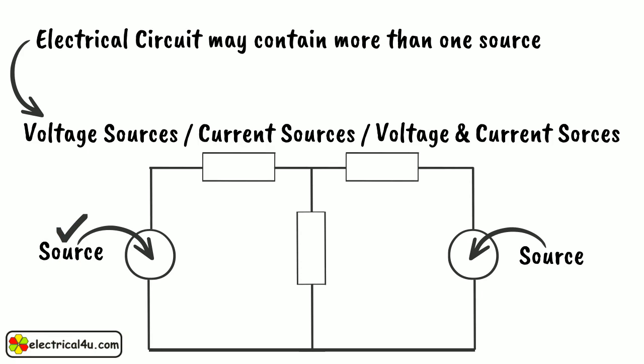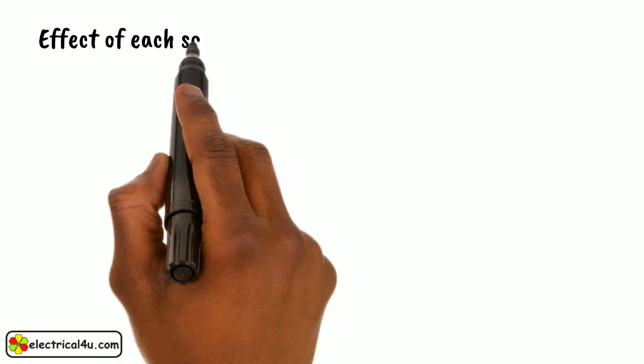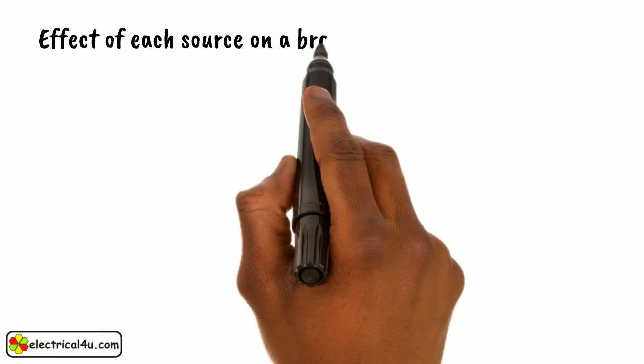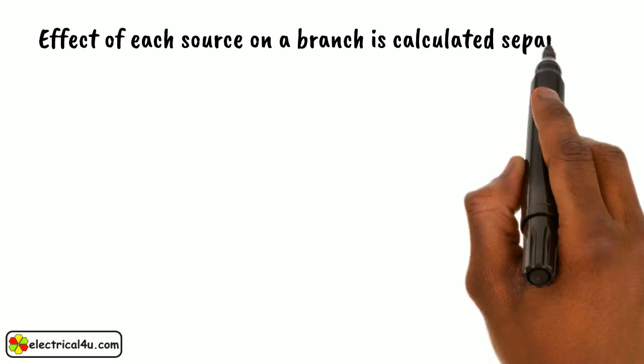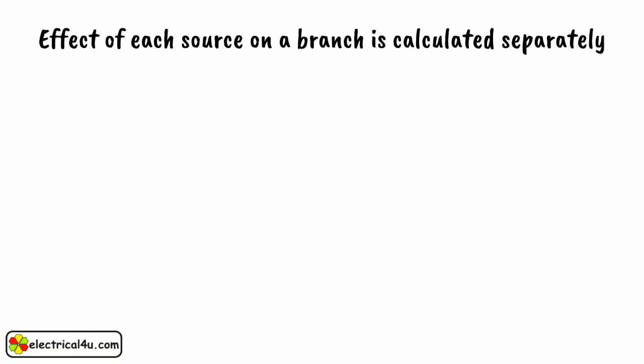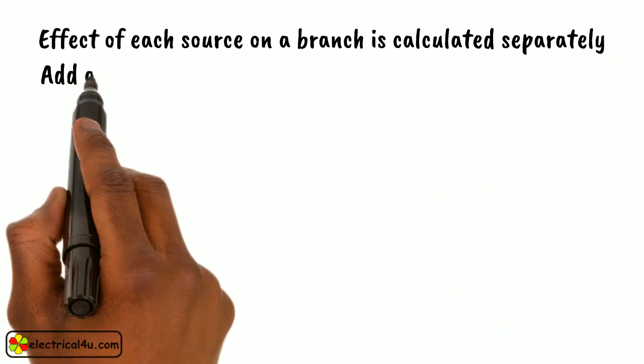Here, the effect of each source is calculated separately, and the combined effects of all sources are taken into consideration. The effect of each source on a particular branch of a network is calculated first separately. Then, we add all effects on that branch of the circuit.